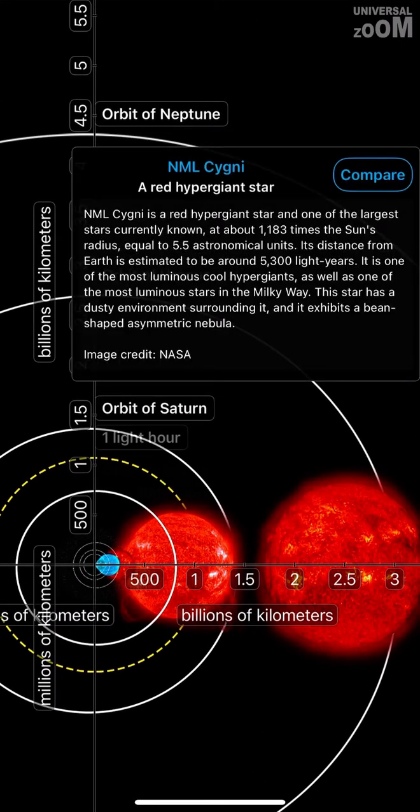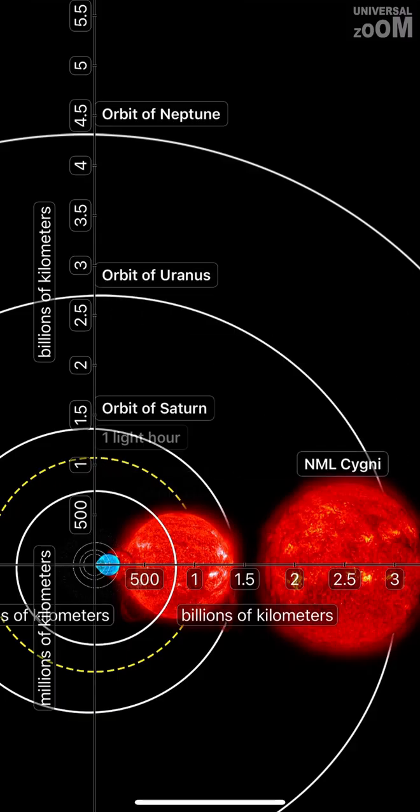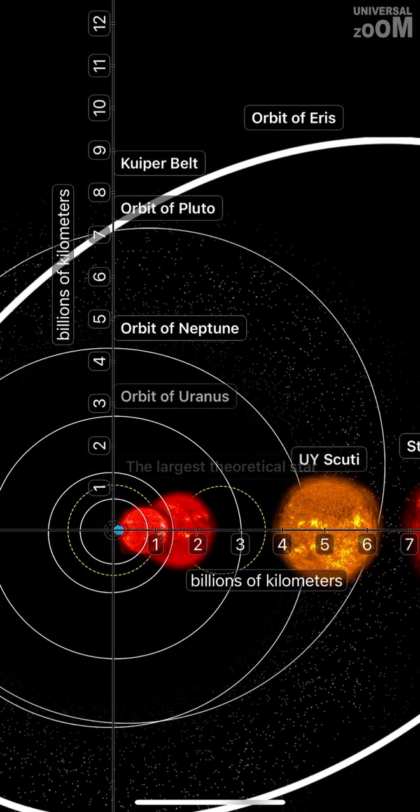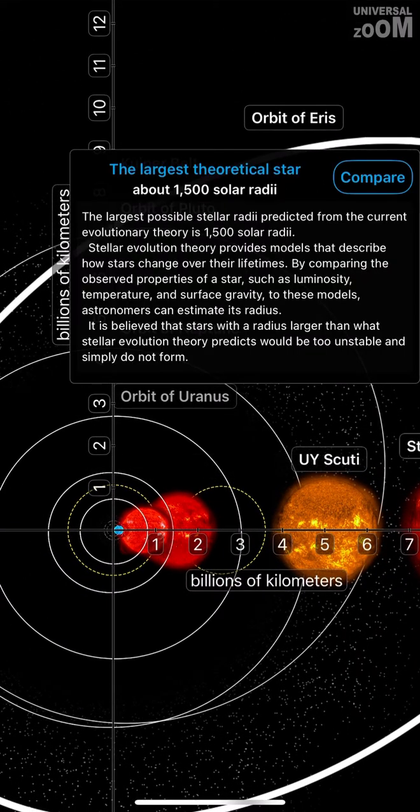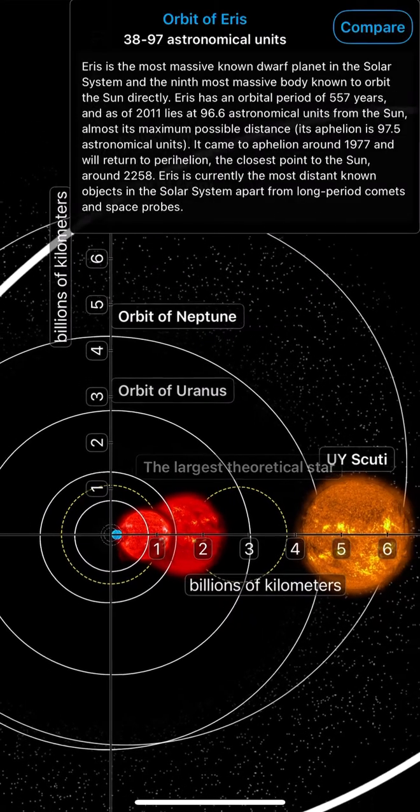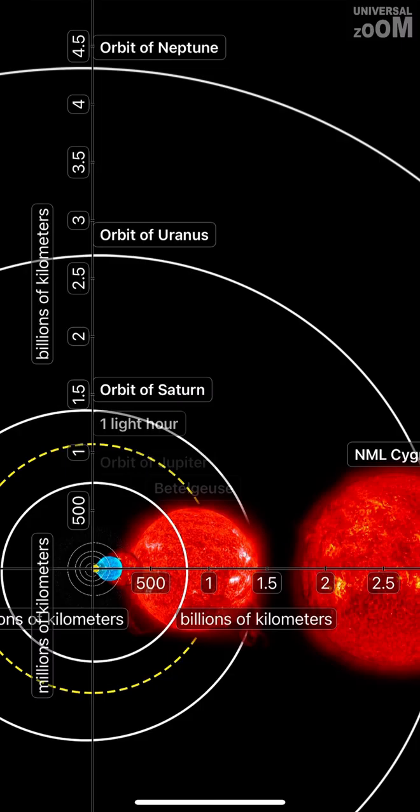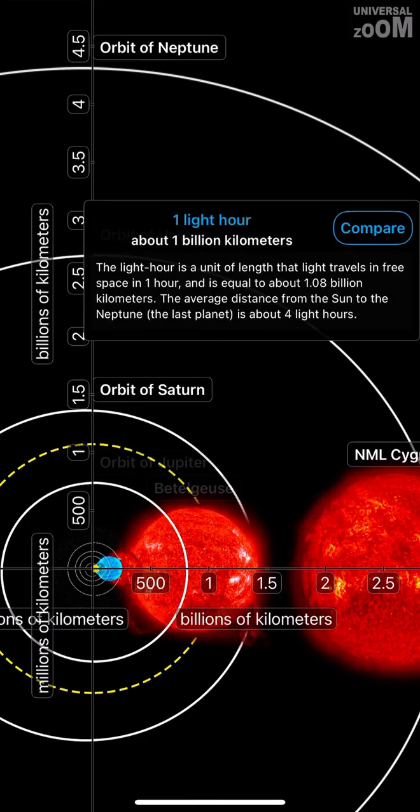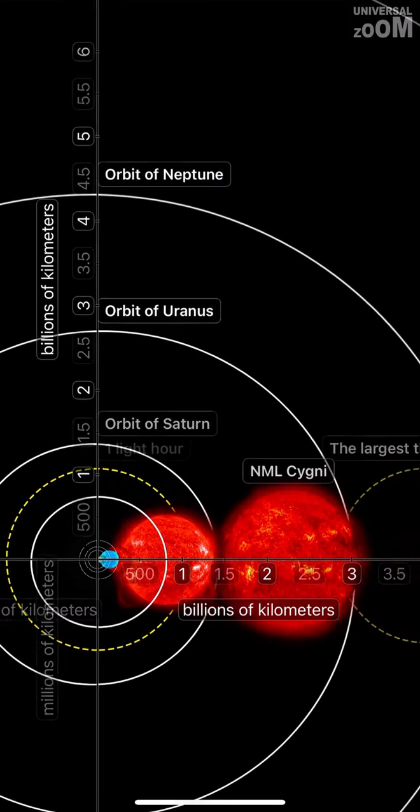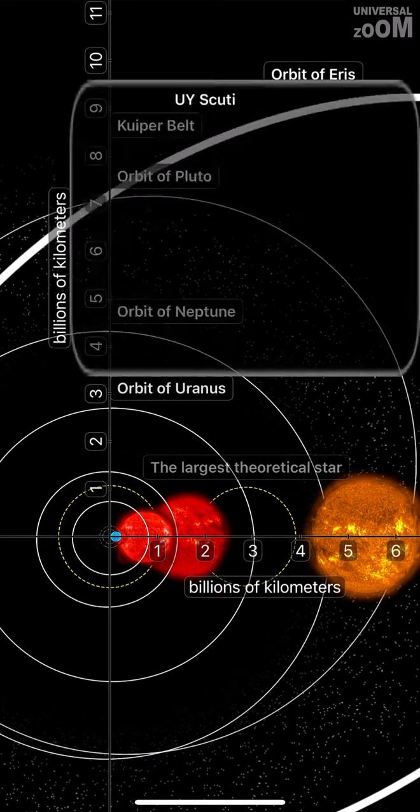NML Cygni, a red hypergiant star. The largest theoretical star, about 1,500 solar radii. Orbit of Eris. One light hour, about 1 billion km.